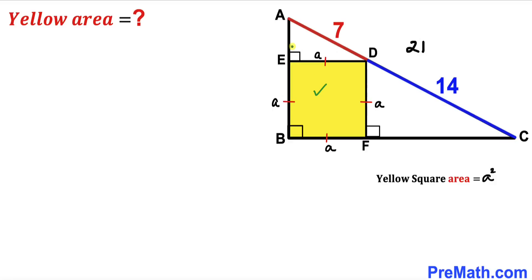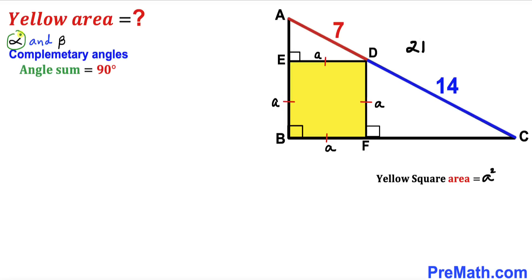Since we are dealing with this square, angle AED is 90 degrees and likewise angle CFD is 90 degrees. Now let's assume alpha and beta are two complementary angles, meaning alpha plus beta must equal 90 degrees. Let's assume this angle is alpha, so the adjacent angle must be beta.